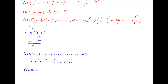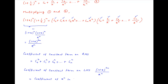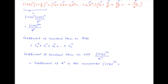The coefficient of the constant term on the left-hand side — which is (1 + x)^(2n) / x^n — equals the coefficient of x^n in the numerator (1 + x)^(2n), and this is equal to (2n choose n).